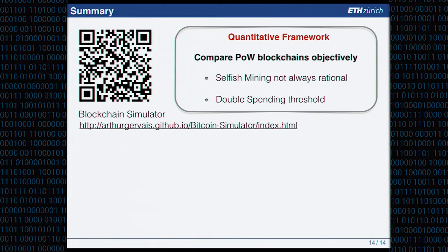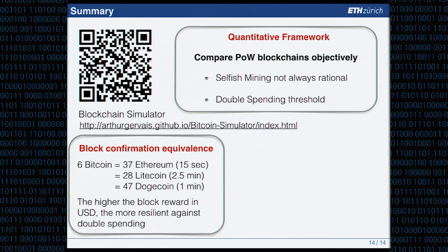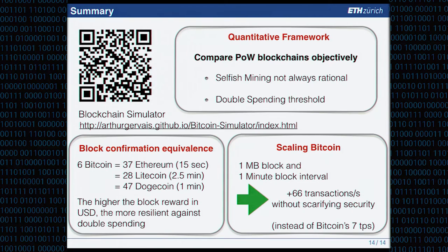As a summary: we proposed a quantitative framework to objectively compare different blockchains and give numbers on security provisions for Ethereum, Bitcoin, Litecoin, or any other reparameterization. We showed that selfish mining is not always rational, proposed a double spending threshold to quantify required block confirmations for a given transaction value, showed block confirmation equivalences across chains, and demonstrated that higher block reward in USD means greater resilience against double spending — important for block halving events. And we showed how to scale Bitcoin by a factor of 10 with only one parameter change without sacrificing security.